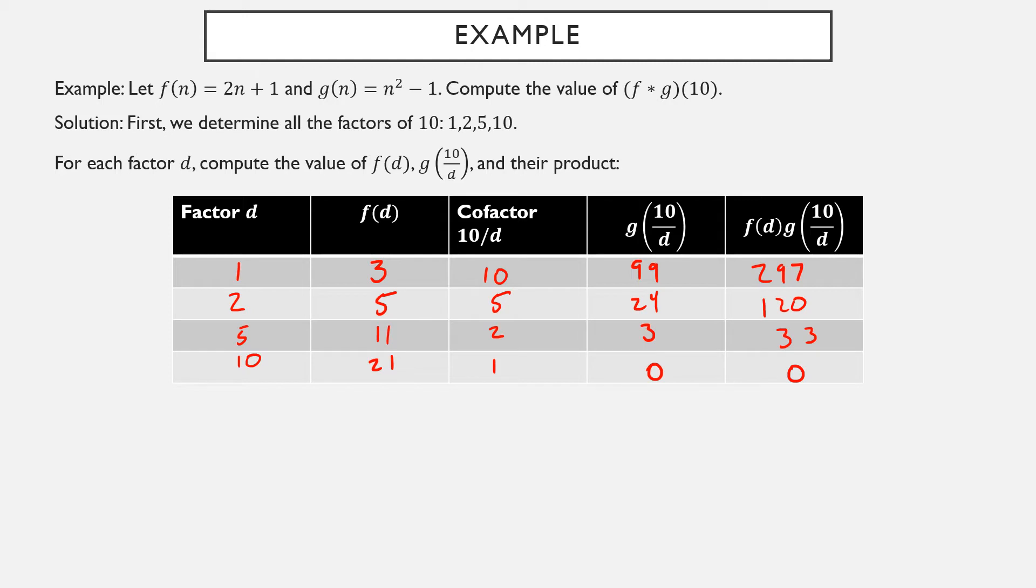So there we have it. We've computed all the values f(d), g(10/d), where d ranges over all the positive factors of 10. And next, all we have to do is add all of them up for a result of 450. So we've computed that f star g of 10 is 450. What you shouldn't necessarily expect, by the way, is a nice simple formula that you will then plug numbers into later. For each number, you may have to compute this using this lengthy technique.